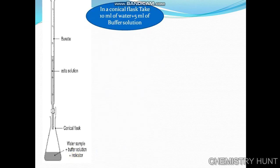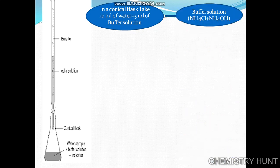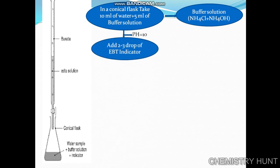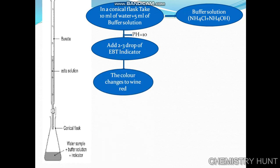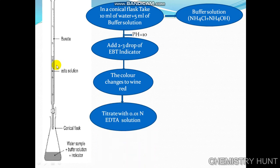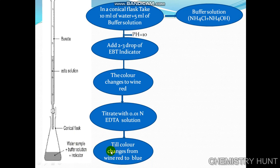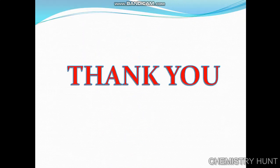In summary: take 10 ml of water in a conical flask and add 5 ml of buffer solution made of ammonium chloride and ammonium hydroxide to maintain pH 10. Add two to three drops of Eriochrome Black T indicator — the color changes to wine red. Then add 0.01 N EDTA solution and titrate until the endpoint, where the wine red color changes to blue. This was a chart to help understand the EDTA method. Thank you.